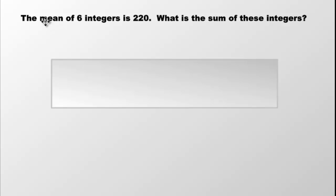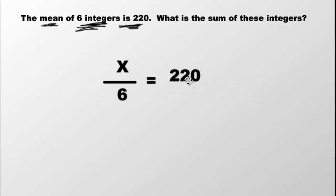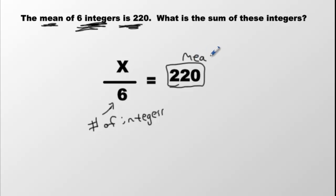One last question: the mean of six integers is 220. Think about what that means. There are six integers, so we divide by six. It's like calculating a class average — add up all the scores and divide by the number of people. The answer to that division is always the mean. The number on top is always the sum. So I set it up: sum divided by six equals 220. The question is, what is the sum — what is that x value?